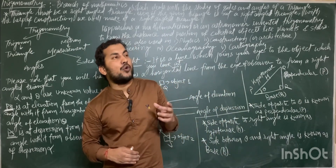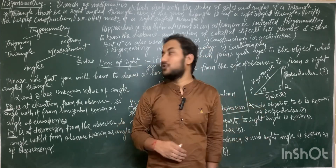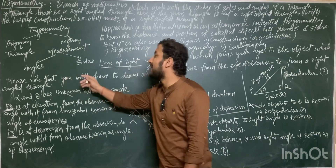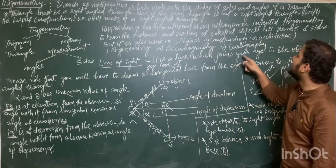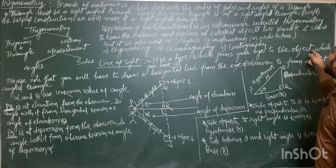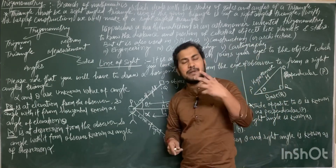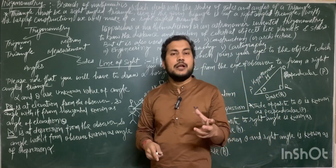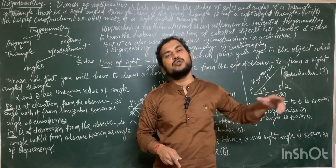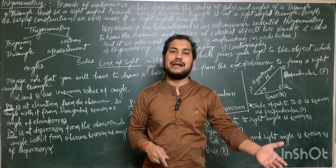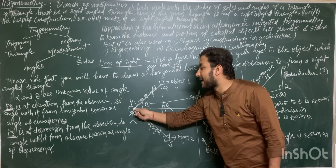Line of sight is a line which joins the eye of the observer to the point where he looks at — that is, it joins your eye to the object which you look at. You also have to keep in mind that to make a right angle triangle, you have to draw a horizontal line from the eye of the observer.